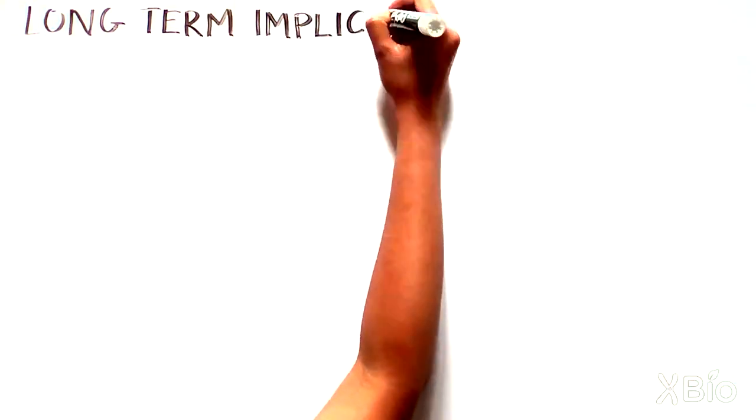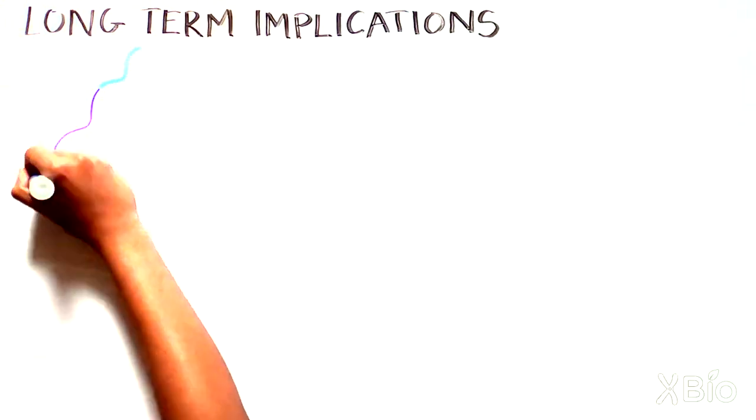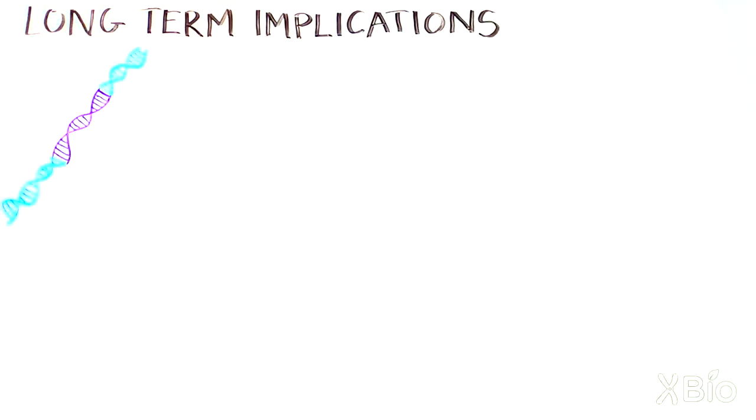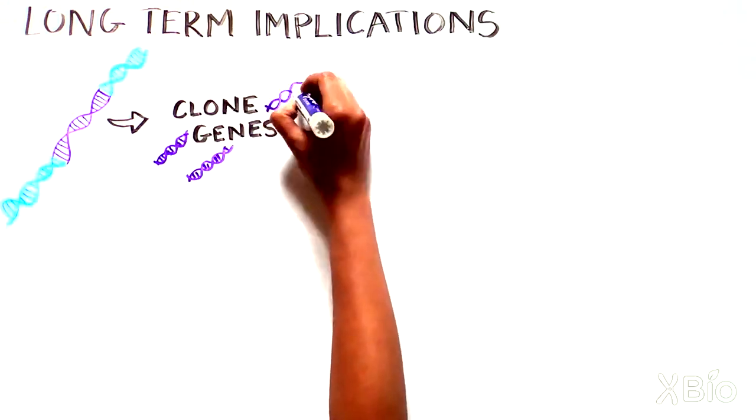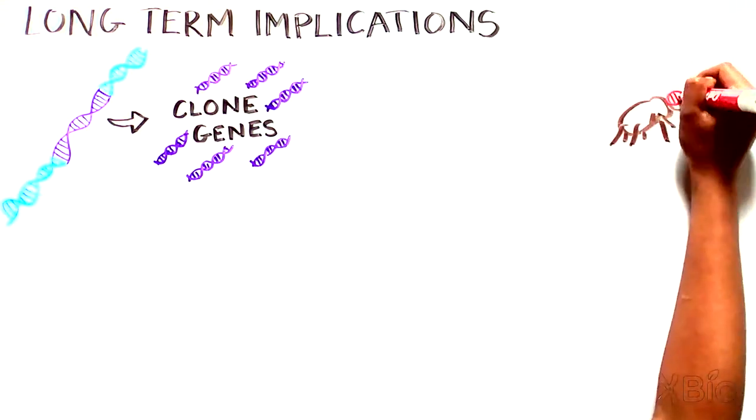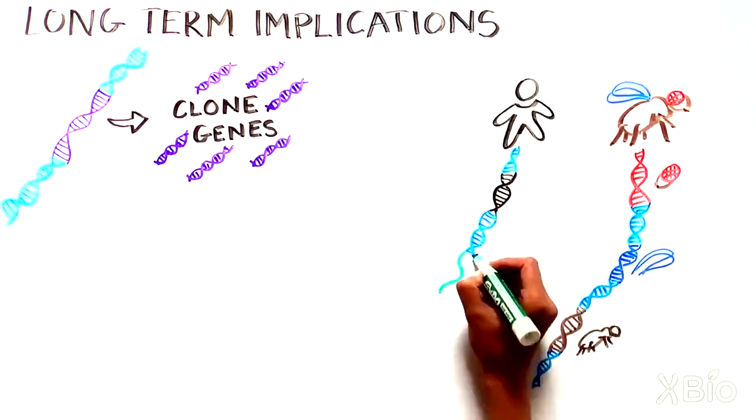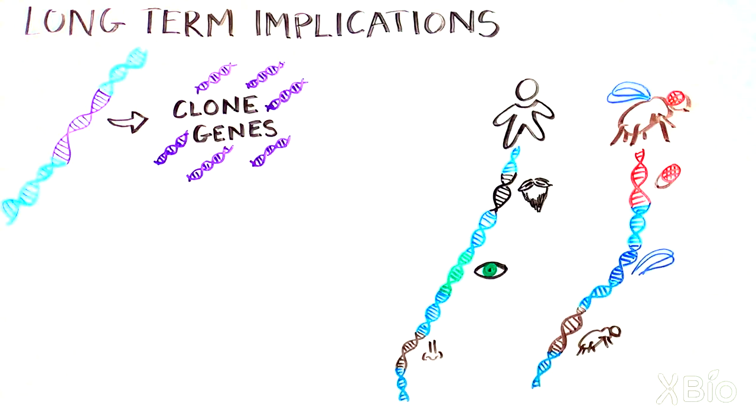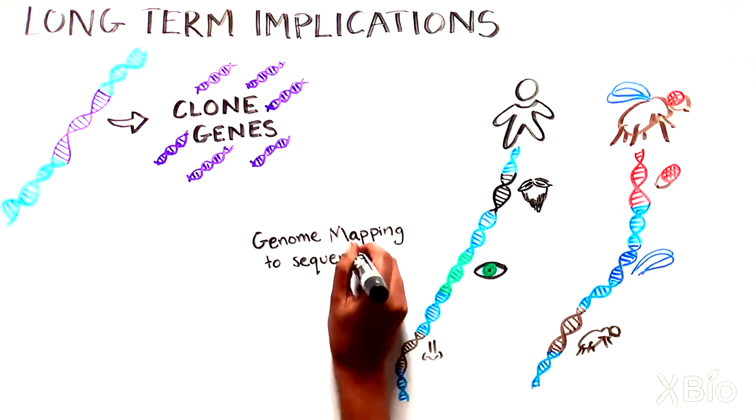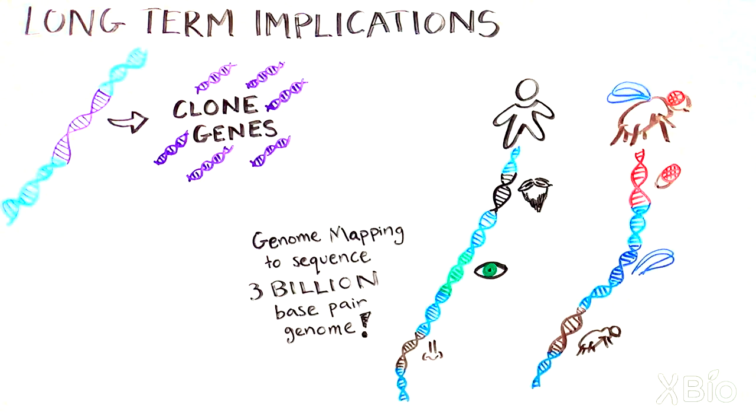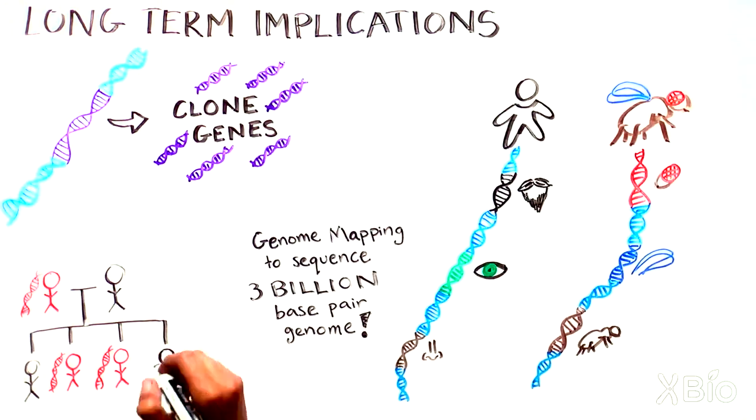The Sturtevant-Morgan findings have had long-term implications. Scientists have used similar genetic mapping strategies to pinpoint the location of and then clone a gene of interest. On a grand scale, scientists constructed genetic maps of thousands of genes in Drosophila and humans, and then took this concept one step further to sequence the entire 3 billion base pair human genome. The genome sequence is the ultimate high-resolution map. Even now, scientists use genetic mapping to find a connection between a genetic disease that runs in families and gene mutations that might underlie the disease.